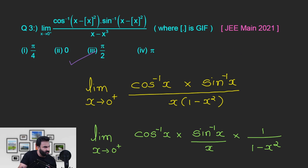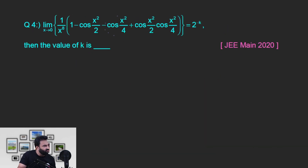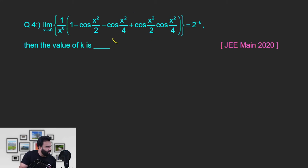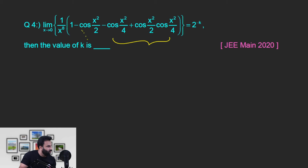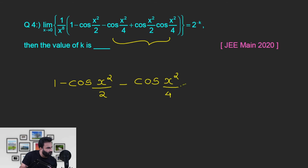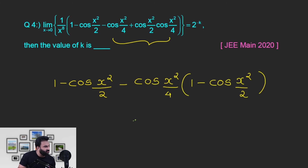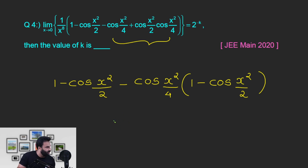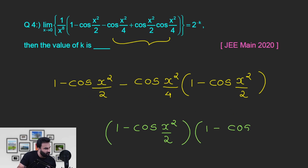में आई, चल, आगे बढ़ते हैं। यह चीज़ जो है — यह factorizable दिखती है, देखो ध्यान से। इन दोनों में से मैं minus cos x square by 4 बाहर निकाल रहा हूँ — यह सिर्फ bracket वाली चीज़ को अभी पहले simplify कर लेते हैं। पूरे expression में से मैंने 1 minus cos x square by 2 बाहर निकाला है। तो यहाँ बच जाएगा 1, यहाँ है cos x square by 4 — denominator में क्या है x raised to power 8।